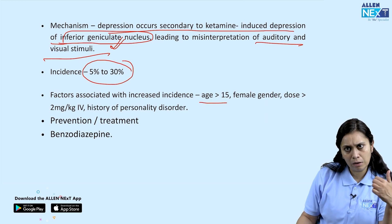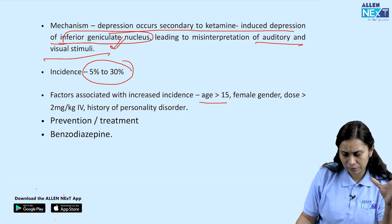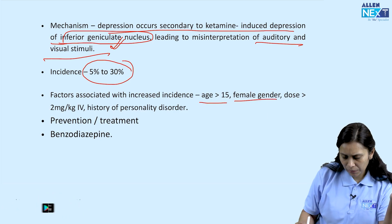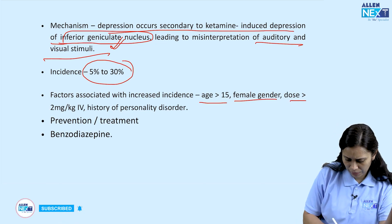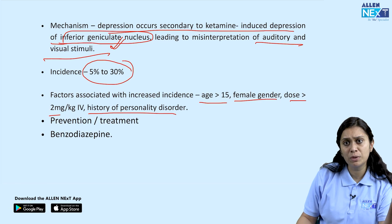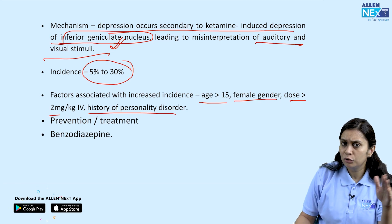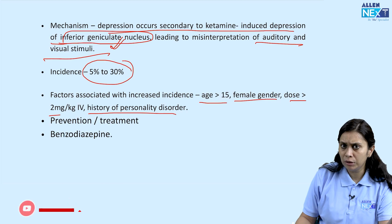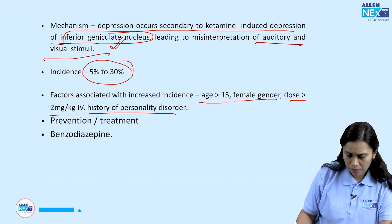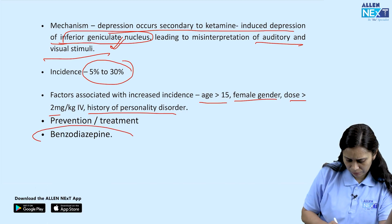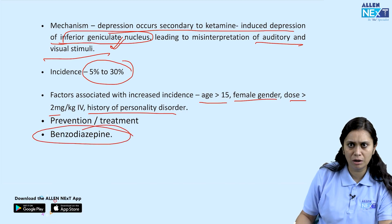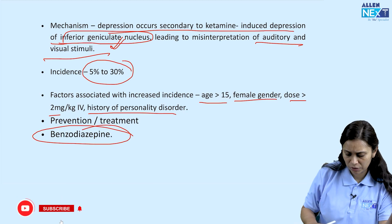Emergence delirium is more associated with higher age — in children it is seen less. It is more common in female gender, at a high dose greater than 2 mg/kg body weight IV, and if the patient has a history of personality disorder. Prevention and treatment is the same: benzodiazepine — midazolam is the drug of choice.